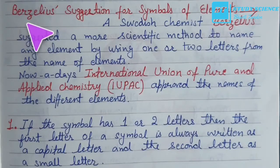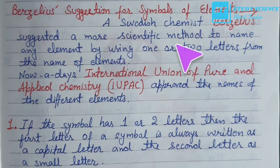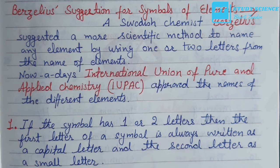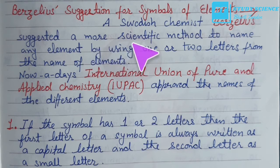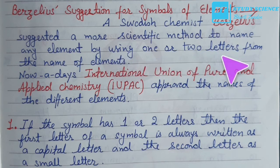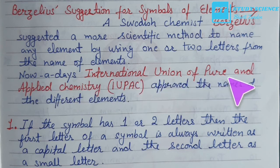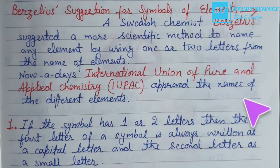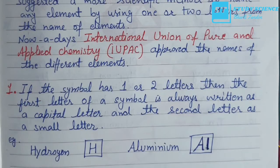Berzelius suggested a more scientific method: name any element using one or two letters from its name. Today, the International Union of Pure and Applied Chemistry (IUPAC) approves the names of different elements, following specific rules.